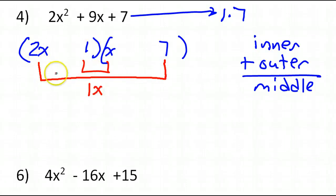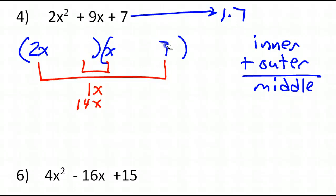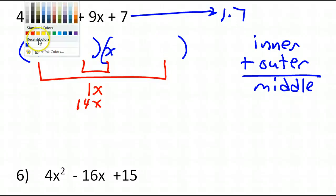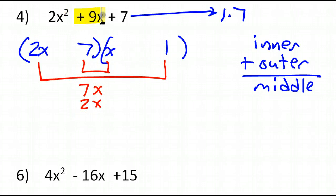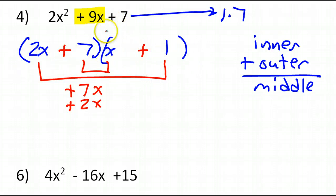Let's try putting the 7 here and the 1 here. Inner I have 7x, outer I have 2x. I'm trying to get a middle of 9x. I'm in luck — if these are both positive, that gives me positive 9. That means both would be positive, and positive times positive is positive 7. So that means this is how you do it. Number 4 is done.